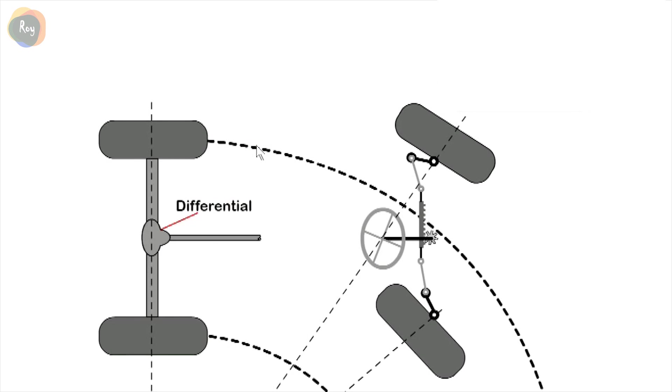Some early cars had only one driven wheel, however the system was not balanced and the driving wheel would spin easily.